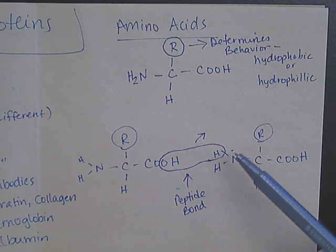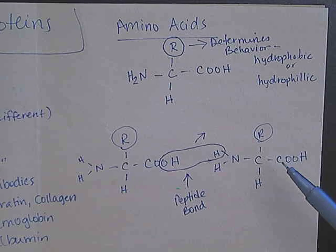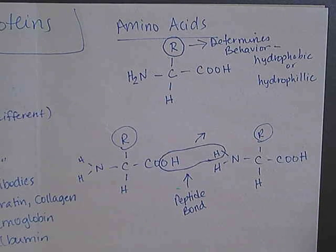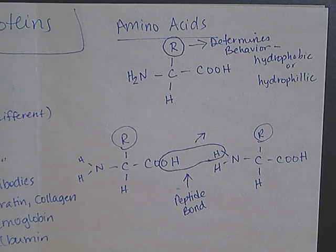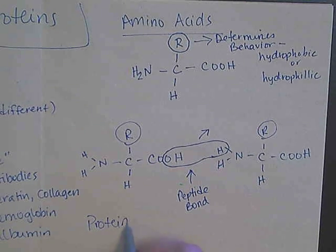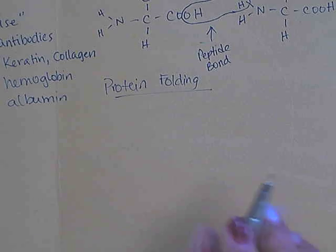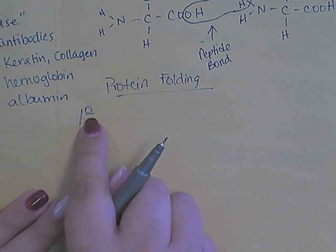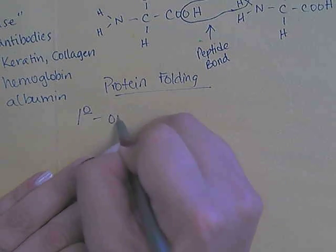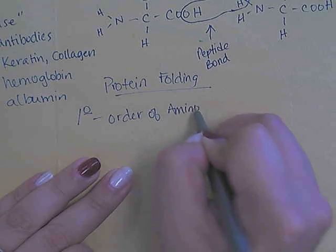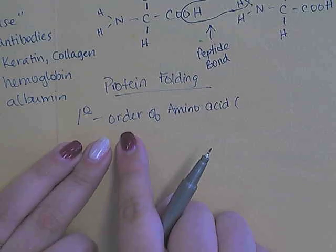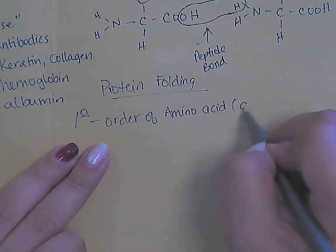When we form these peptide bonds, the protein begins to fold in on itself. It's very important that this folding is done correctly so that the protein is functional. If you change any of these amino acids, you change how — or whether — the protein functions at all. There are four levels of protein folding, each very different from the other. The primary level of protein folding is the order of the amino acids, and the order in which they line up and form bonds is determined by DNA.